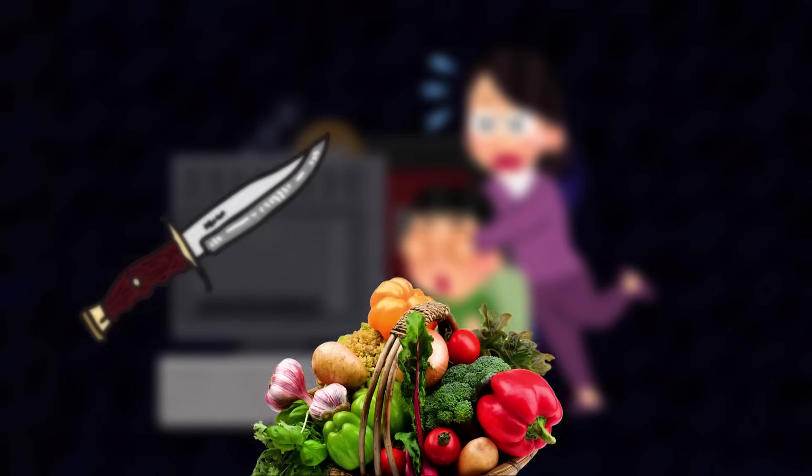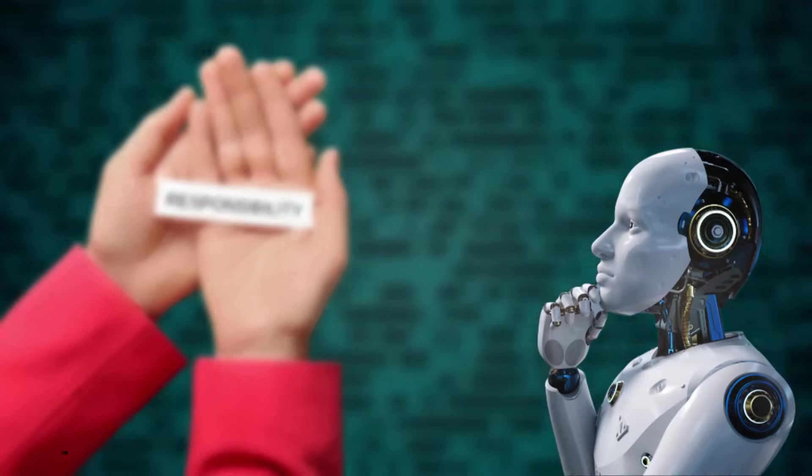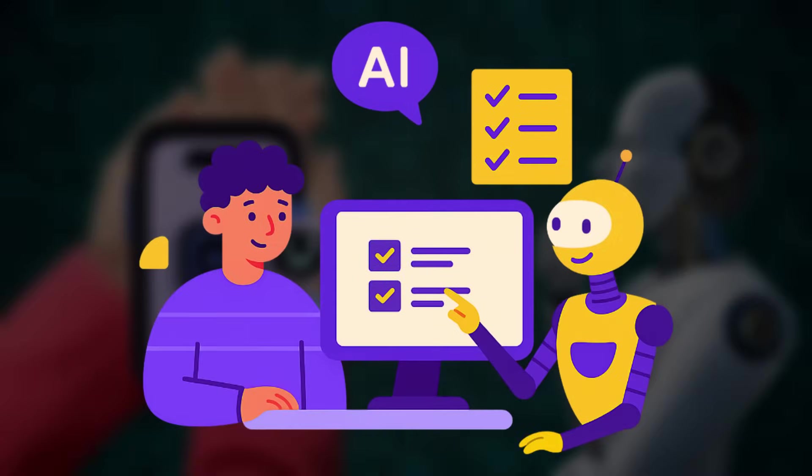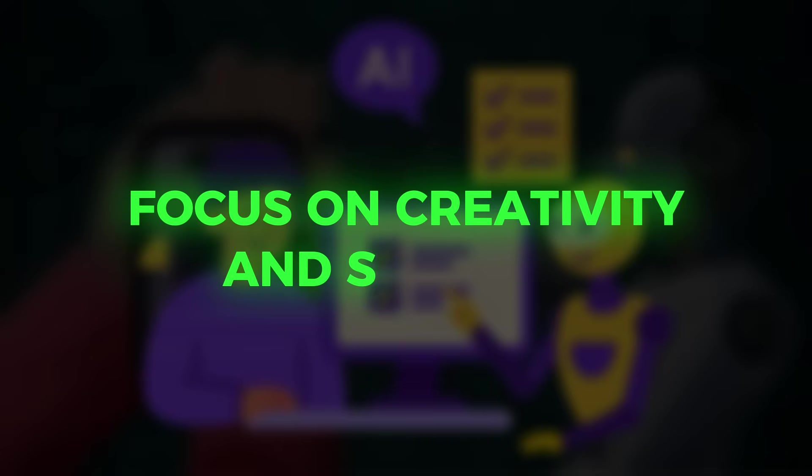AI is like a knife. It can cut vegetables safely or harm if misused. Your responsibility is key. Think of AI as a digital assistant. It handles repetitive or complex tasks while you focus on creativity and strategy.